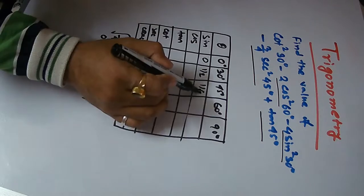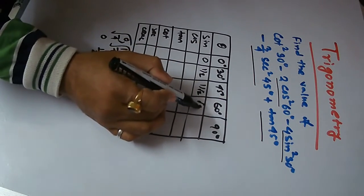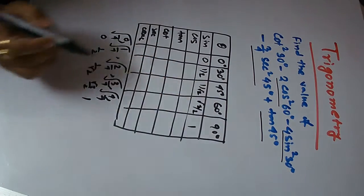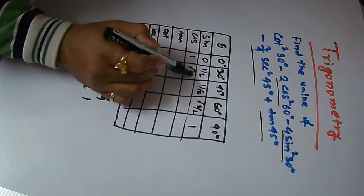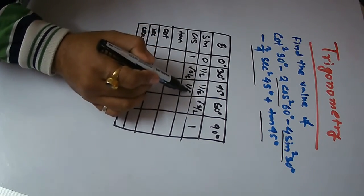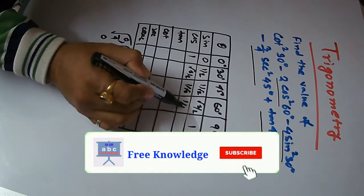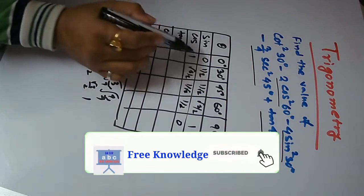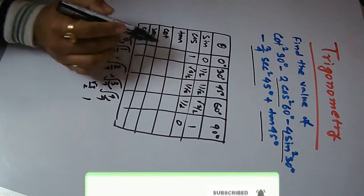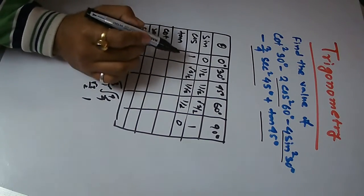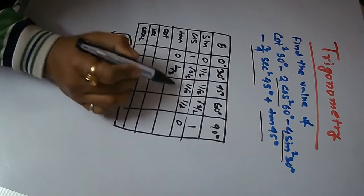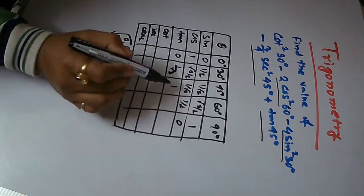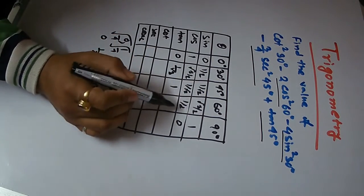Root 3 by 2, 1 by root 2, 1 by root 2. This is the sine theta, cos theta. 0 by 1, 1 by root 3, 1 by root 2, 1 by root 2, root 3 by root 2.